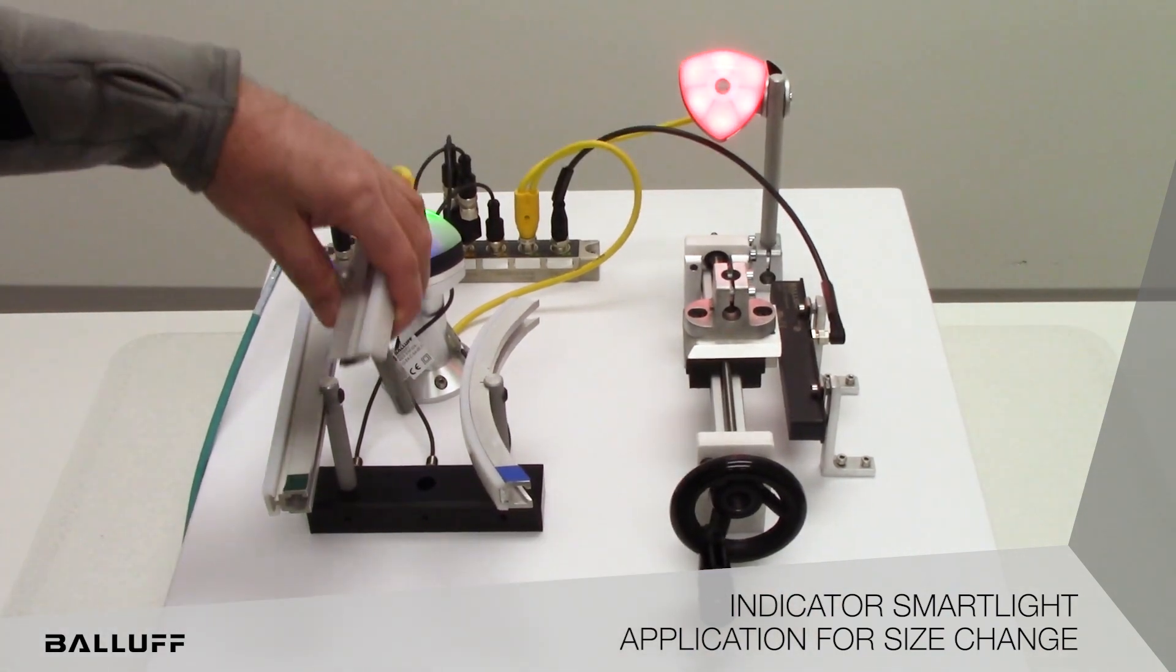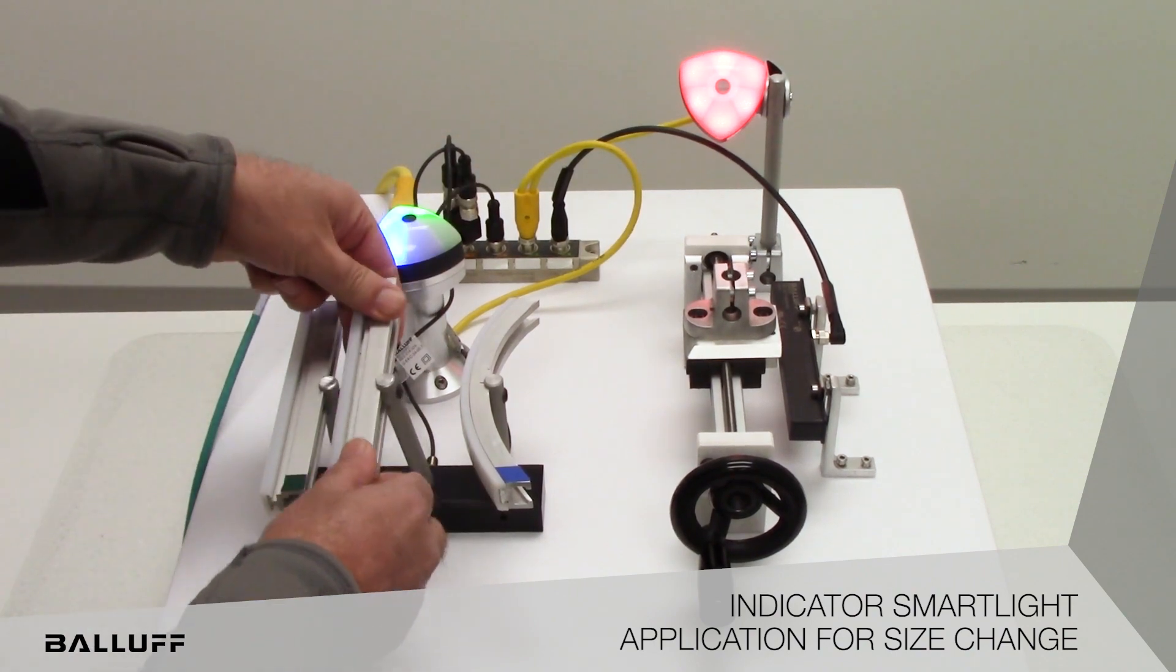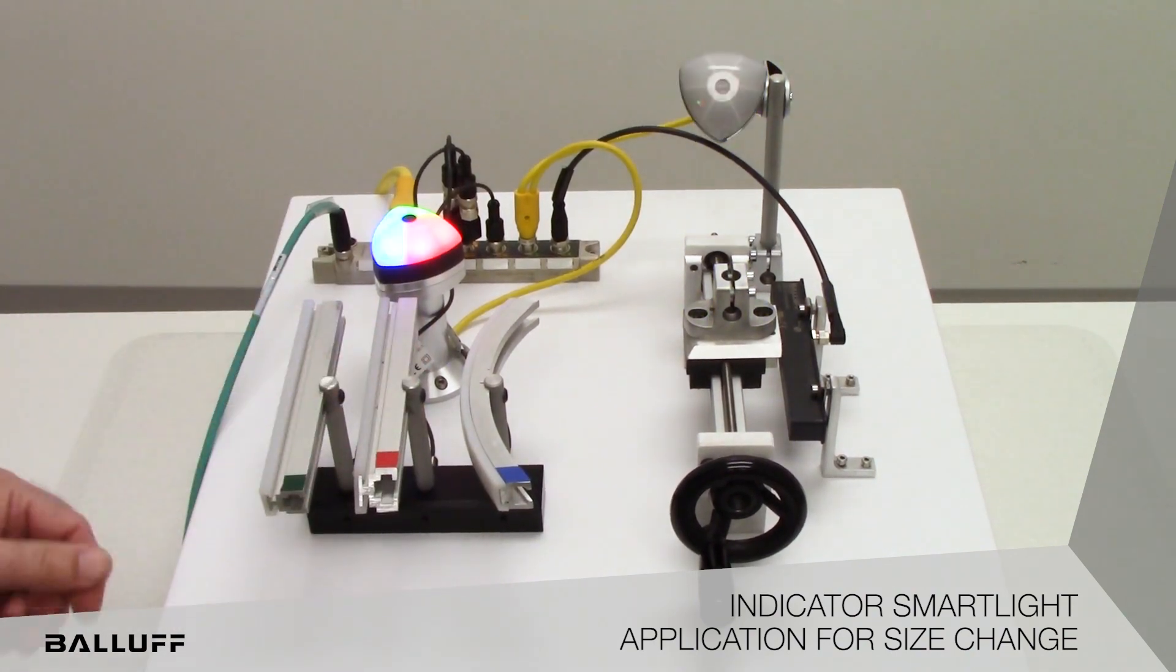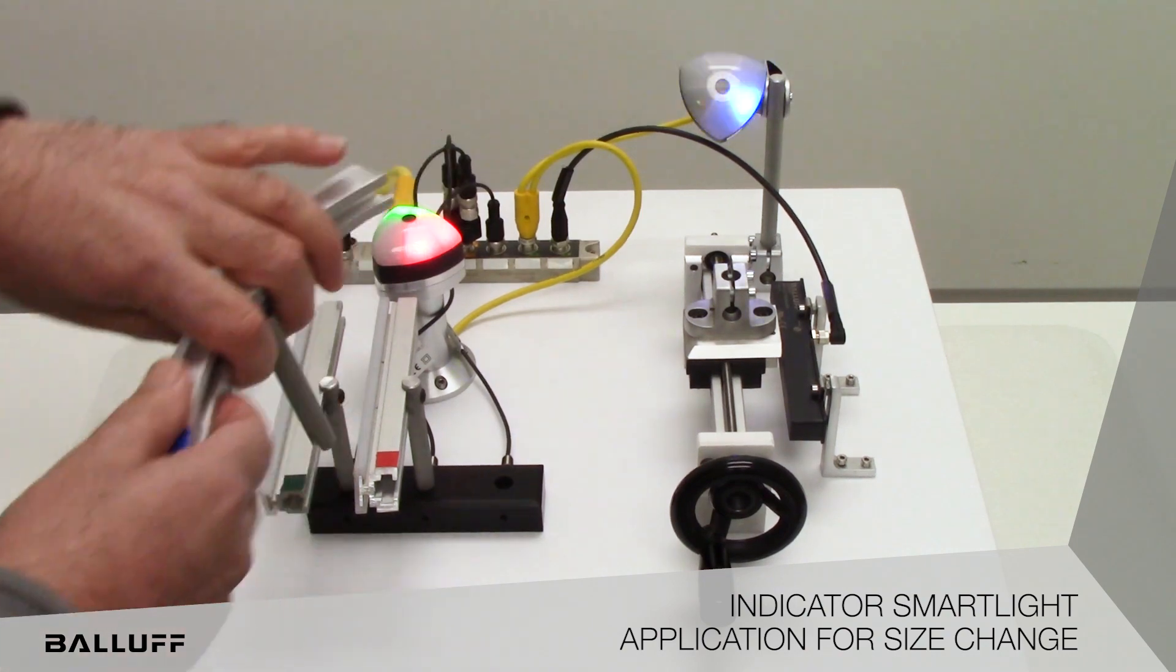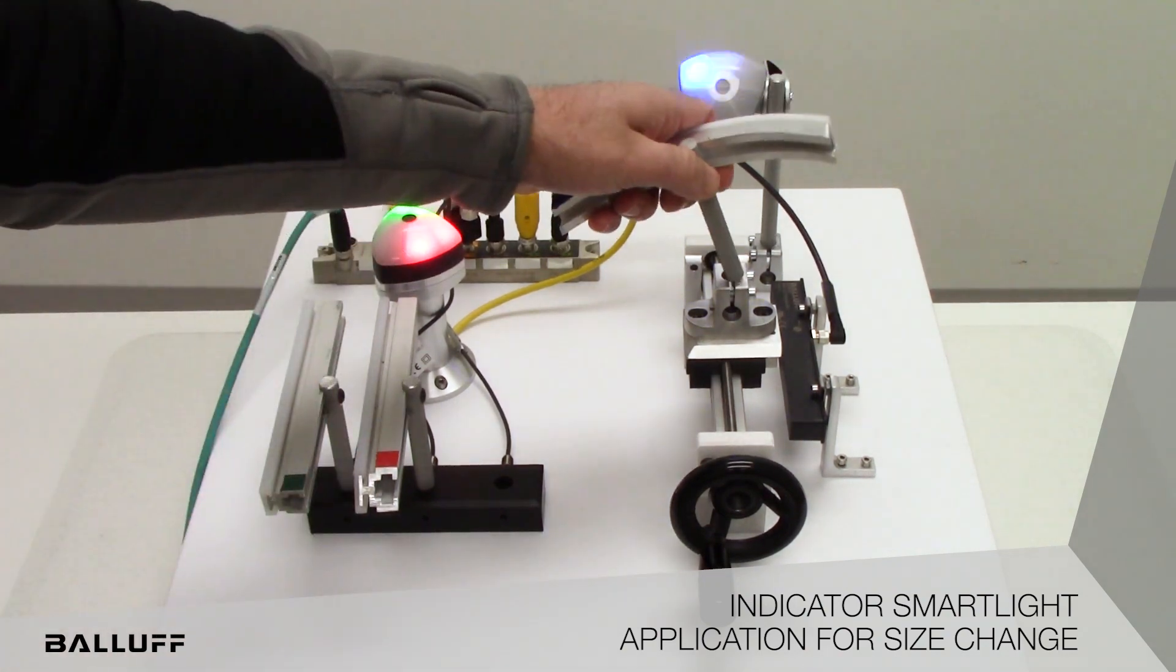If I want to switch that piece I simply put the part back, and now it's telling me I need to go to the blue segments, and now I pull the blue piece out.